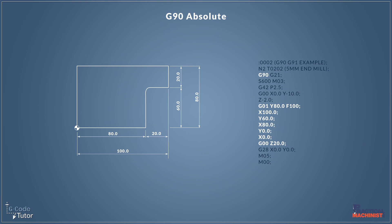So this is how it would look within a program. You can see highlighted at the top there the G90 is on the safety line next to the G21. We can put this anywhere — I always select either absolute or incremental on the safety line, and then if we wish to change it further down the program we simply state G90 or G91 to switch between the two.